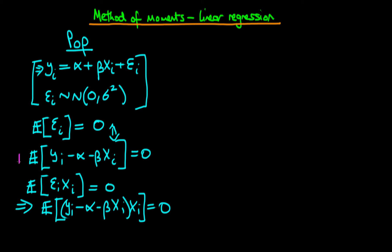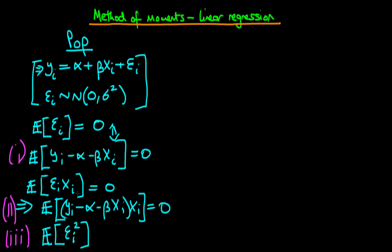We have two moment conditions but three parameters to estimate — alpha, beta, and sigma squared — so we need a third. Since the first two don't involve sigma squared, the third one should. The variance of εᵢ equals the expected value of εᵢ squared, because E[εᵢ] equals zero. This means the expected value of εᵢ squared equals sigma squared. I won't rearrange this third condition to involve alpha and beta, as it makes more sense to keep it as is when forming the sample equivalent.